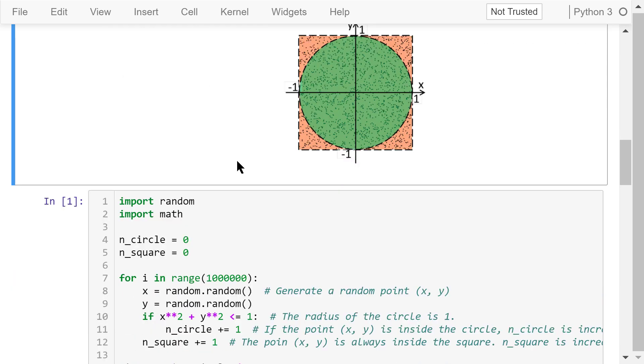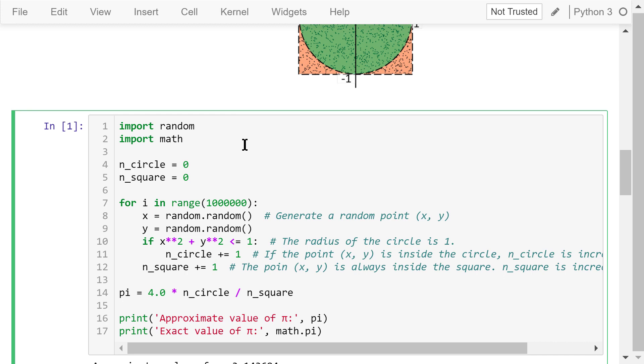Let's see the program. We will need to use some of the functions in the random and math libraries, so let's import these libraries first. Then we initialize the number of dots in the circle and the number of dots in the square to be 0.